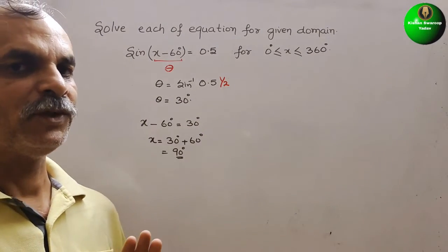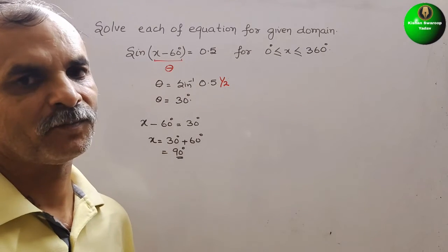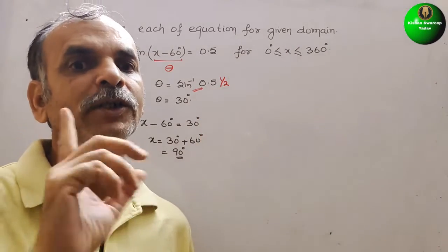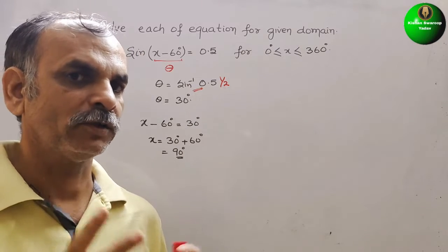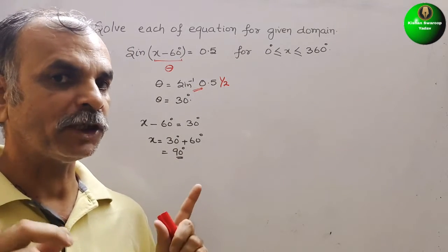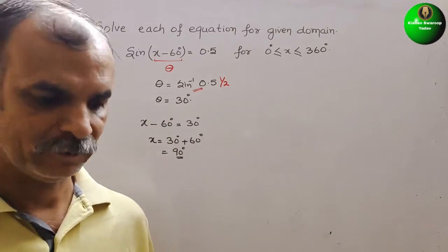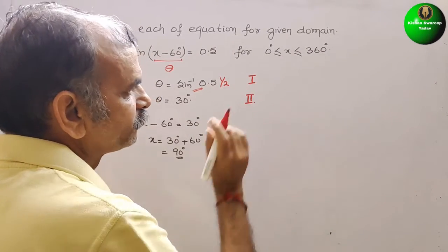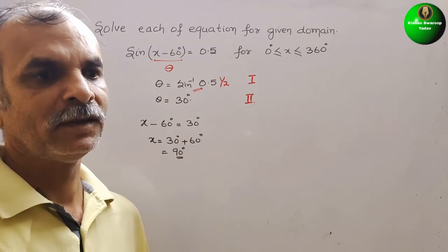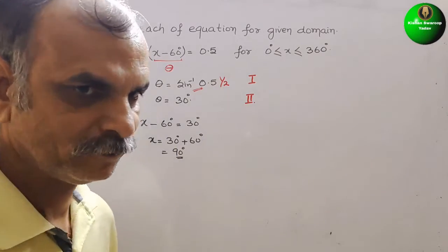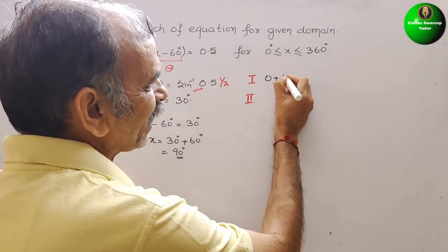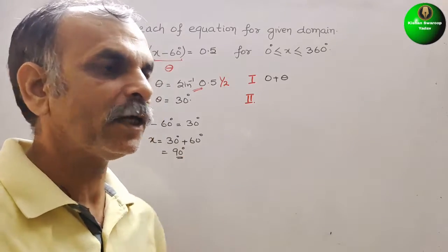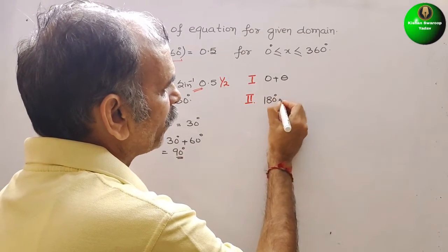Now we should not write like directly this. See this, here the sine 0.5 sign is what? Positive. So positive means what? Sine is positive in first and second quadrant. So we can say it lies in first and second quadrant. So first quadrant is what? 0 plus theta. But in second quadrant it is 180 degrees minus theta.